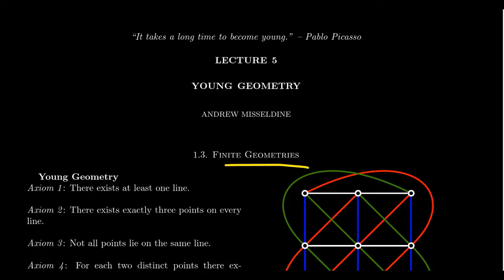In previous lectures, we introduced some finite geometries: three-point geometry, four-point geometry, and Fano geometry, which we talked a lot about in Lecture 4. If you're working through the homework connected to this course, we've been exploring five-point geometry in the homework assignments as well. In Lecture 5, we want to introduce one more finite geometry, known as Young's geometry.